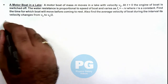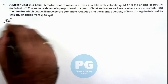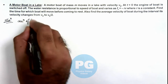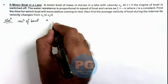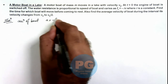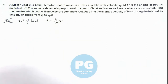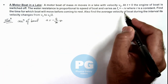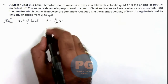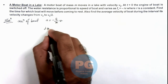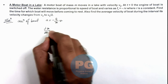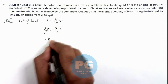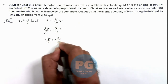First, we can directly write the acceleration of the boat as a = -r/m × v, because the resistance force is -rv. In this situation, we can write a as dv/dt, so dv/dt = -(r/m)v, which can be rewritten as dv/v = -(r/m)dt.